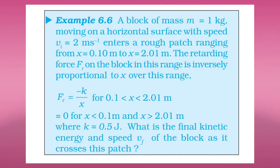Example 6.6. A block of mass m = 1 kg moving on a horizontal surface with speed v_i = 2 m/s enters a rough patch ranging from x = 0.10 m to x = 2.01 m. The retarding force F_r is inversely proportional to x over this range: F_r = -k/x for 0.1 < x < 2.01 m, and F_r = 0 outside this range, where k = 0.5 J. Find the final kinetic energy and final speed of the block.